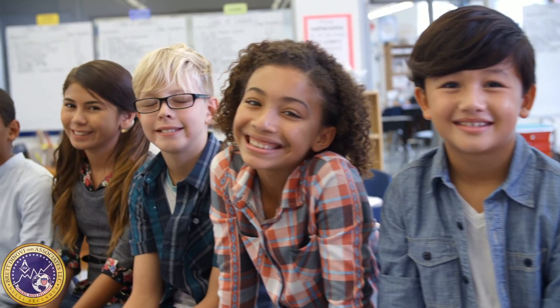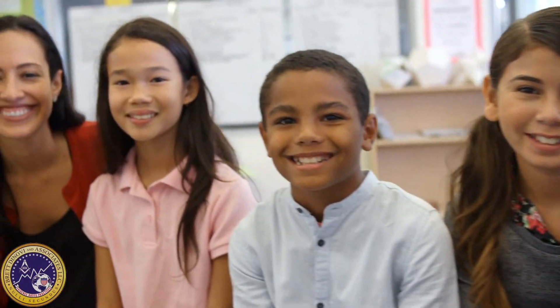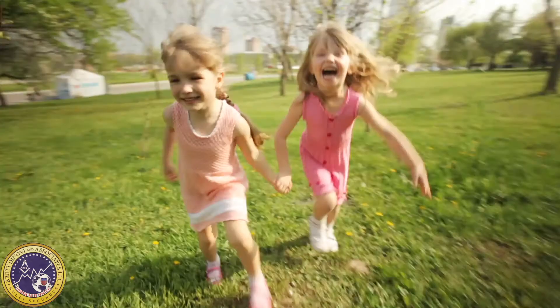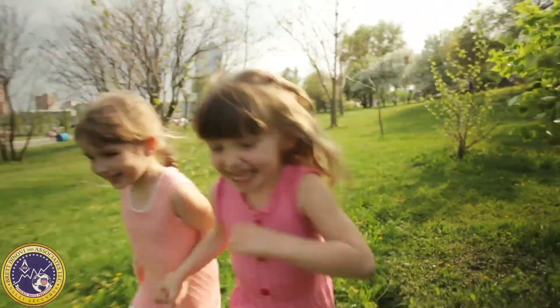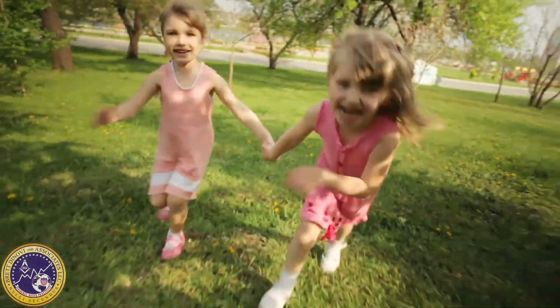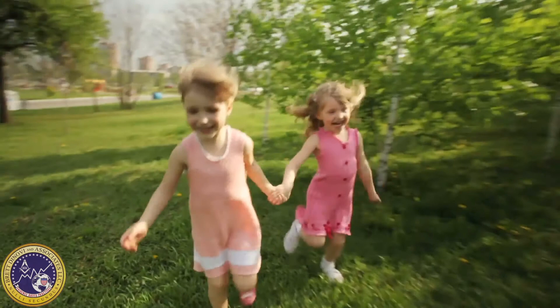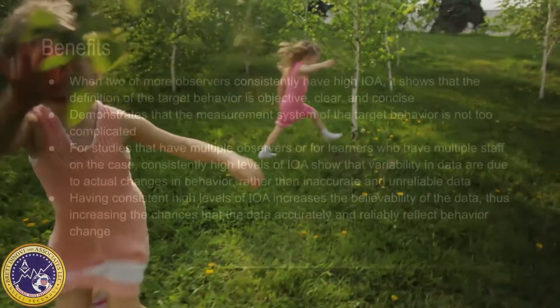For example, if IOA between two observers was high at the beginning of data collection and has since decreased, observer drift has occurred. IOA data will not show which observer's measurement has drifted, but further assessment can be conducted to determine if the measurements are reliable and accurate. If an observer's measurements are no longer accurate and reliable, they may need to be retrained and IOA will need to be assessed again before continuing to measure a learner's behavior.